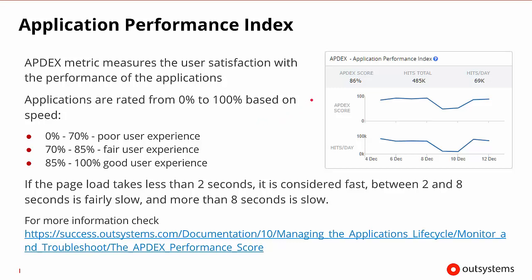In the application information area, there is a performance index called Appdex. Appdex measures user satisfaction with the performance of an application, rating applications from 0 to 100. A score of 0 to 70% is considered poor user experience; 70 to 85% is fair; and 85 to 100 is good. It calculates this by considering page loads under 2 seconds as fast, 2 to 8 seconds as slow, and more than 8 seconds as really slow, which causes bad end user experience.